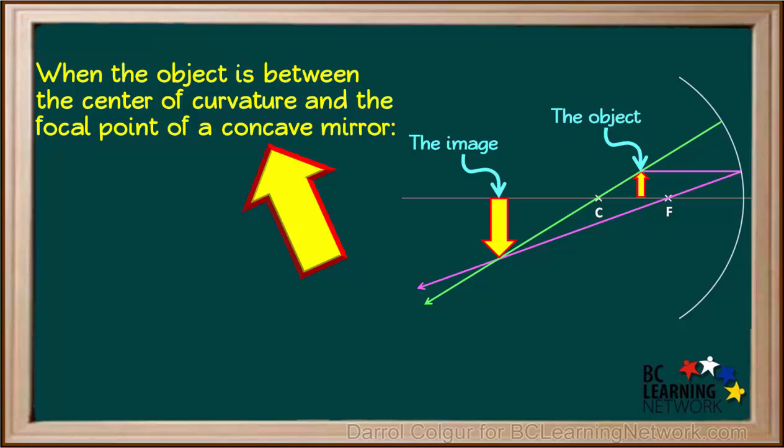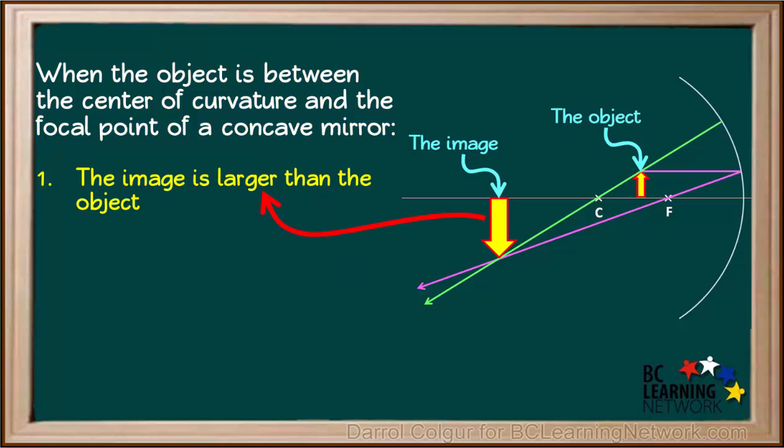Now we use this diagram to summarize the characteristics of an image formed by a concave mirror when the object is between the center of curvature and the focal point. First we can see that the image is larger than the object. Next we see that the image is upside down, or inverted.